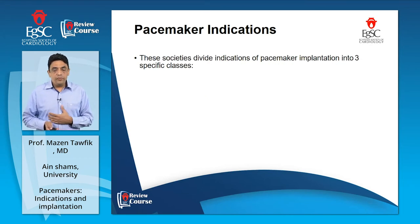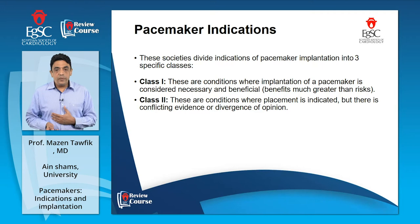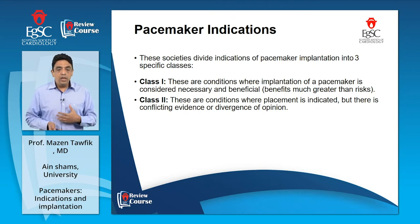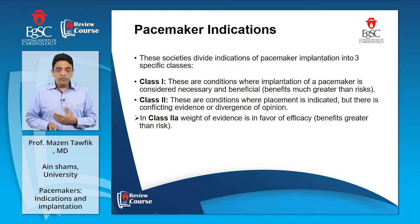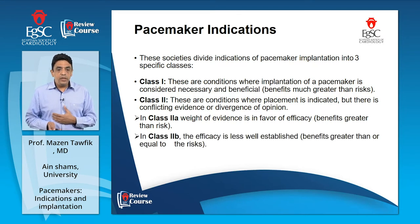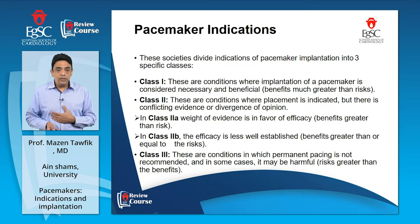These societies divide pacemaker indications into three specific classes. Class I: conditions where implantation is considered necessary and beneficial — benefit is much greater than risk. Class II: conditions where placement is indicated but with conflicting evidence; Class IIa — weight of evidence favors efficacy (benefit greater than risk); Class IIb — efficacy less established (benefit greater than or equal to risk). Class III is essentially a contraindication — conditions where permanent pacing is not recommended and risk is greater than benefit.